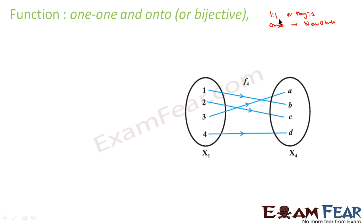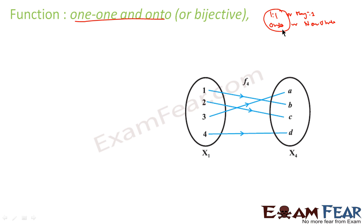We are interested only in the one-to-one onto combination because it has a critical property: if the function is both one-to-one and onto, it is invertible. We are not studying functions which are one-to-one and non-onto, or many-to-one and onto, because those functions do not have any special character. But functions which are one-to-one and onto are invertible functions.